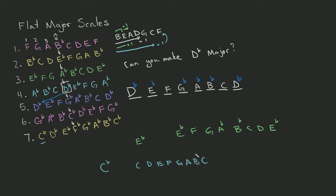So you have B flat, E flat, A flat, D flat, G flat, C flat and C flat, and F flat. So they're all flat. Okay, and that's how you can make flat keys.